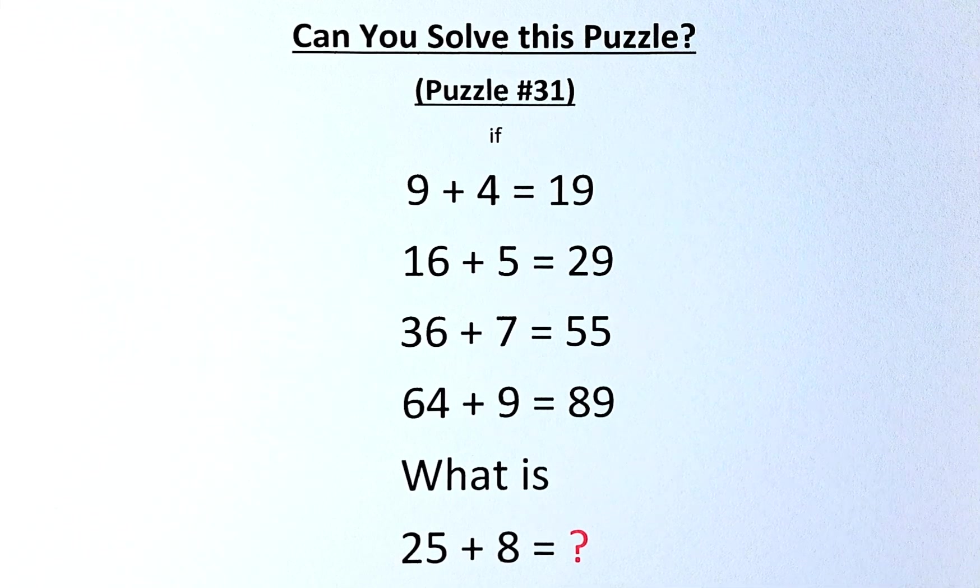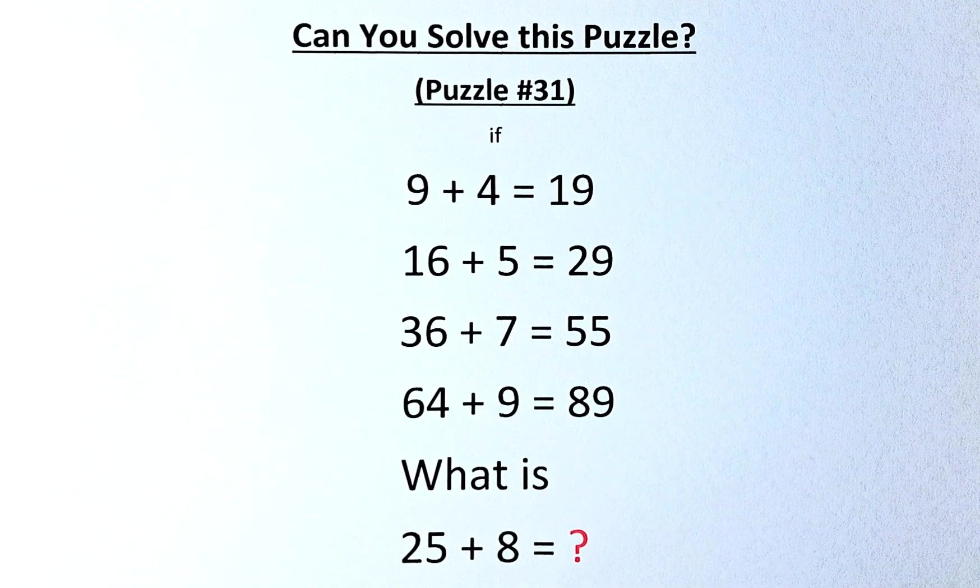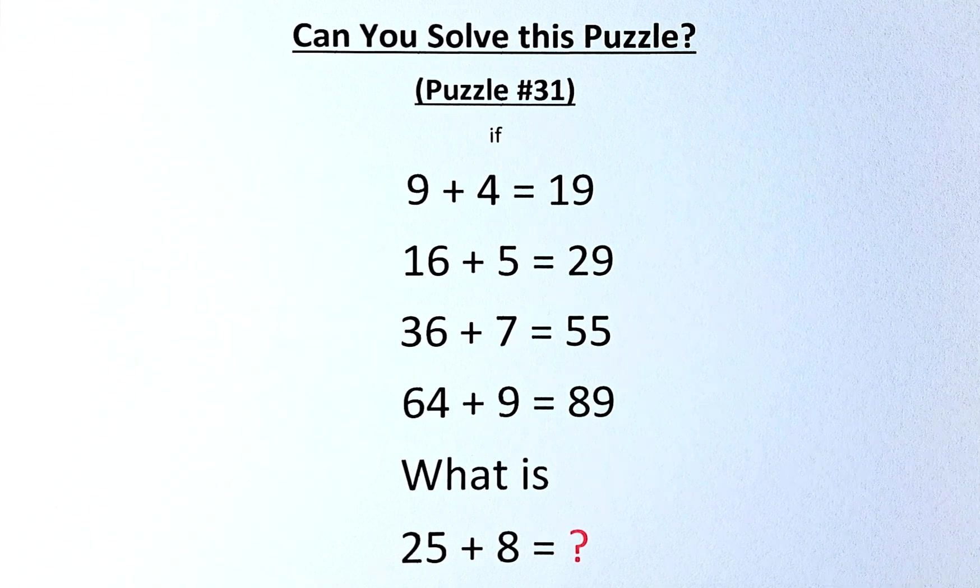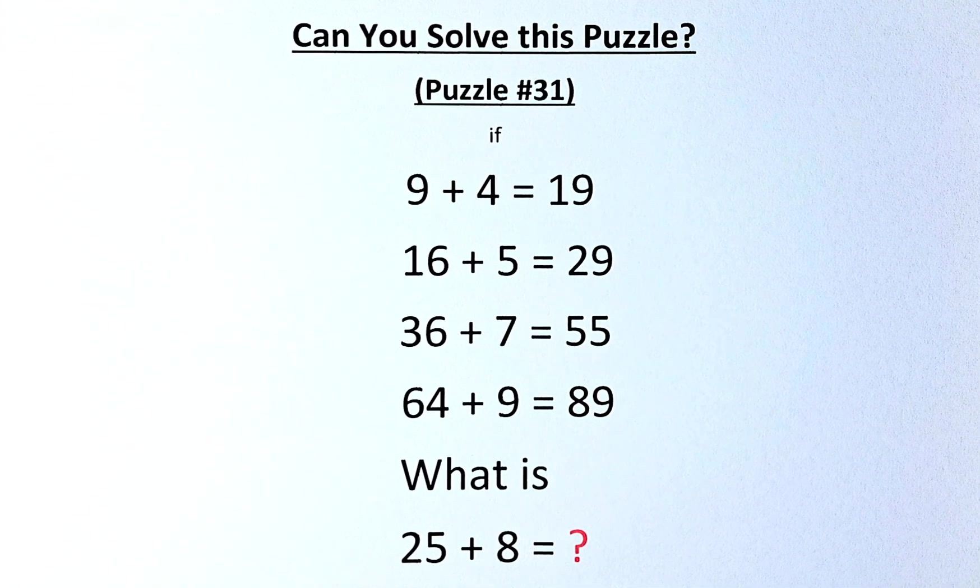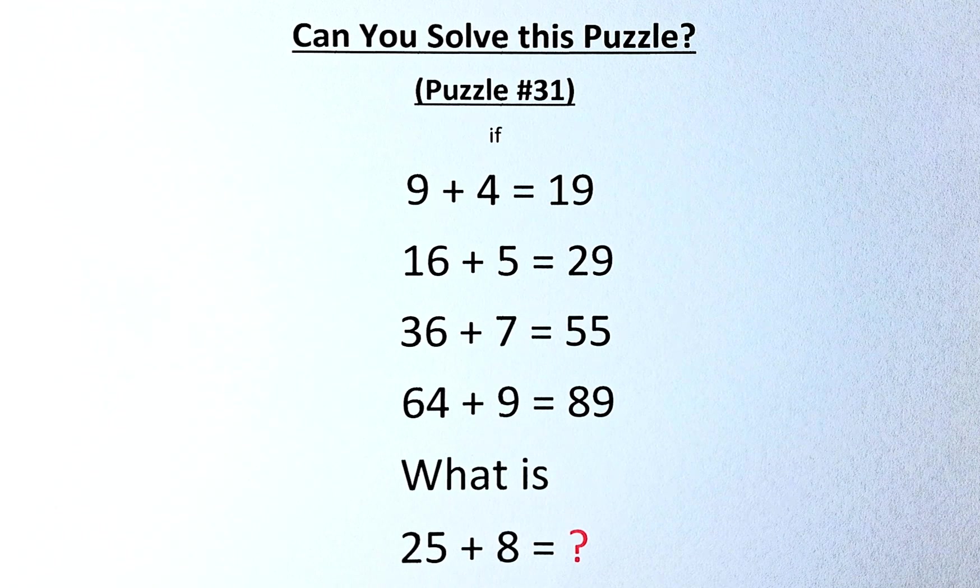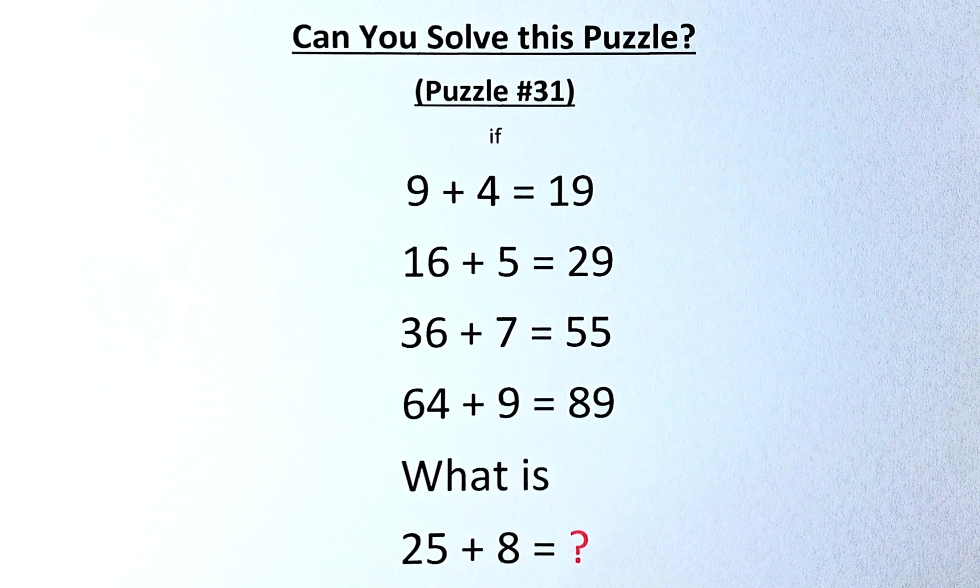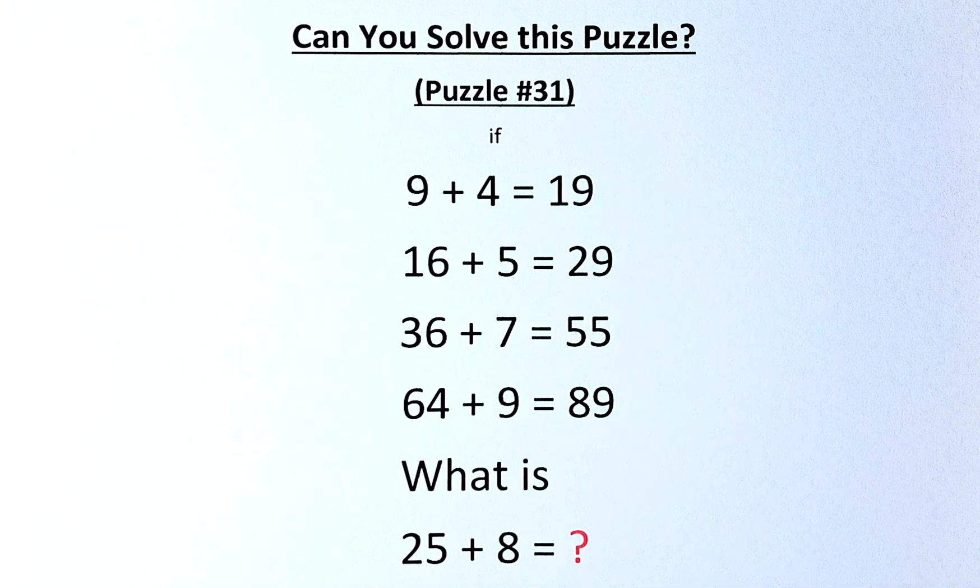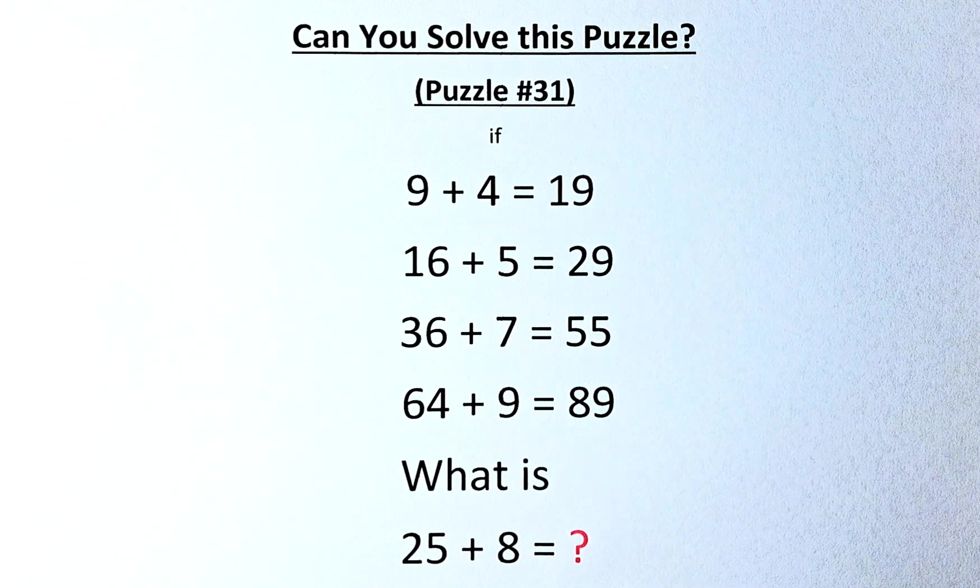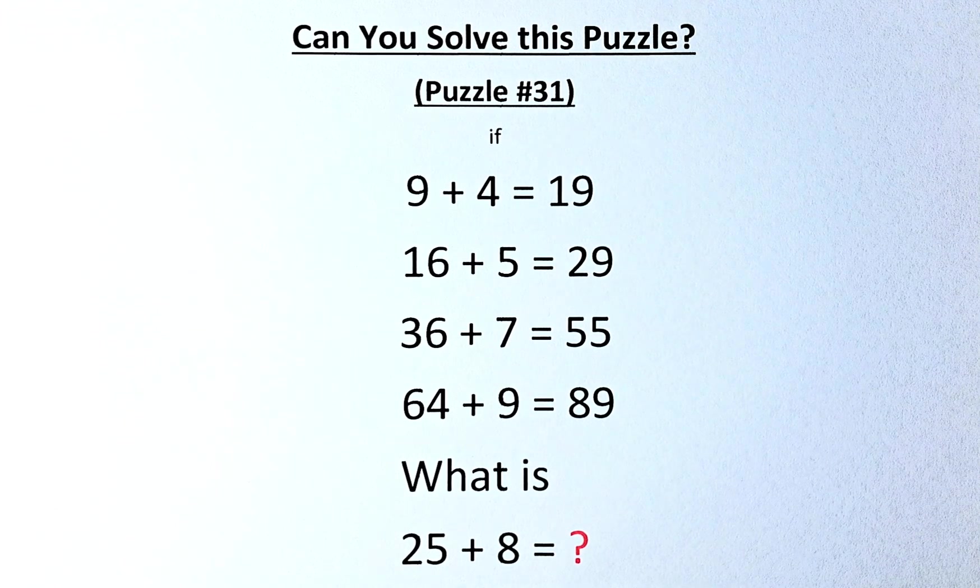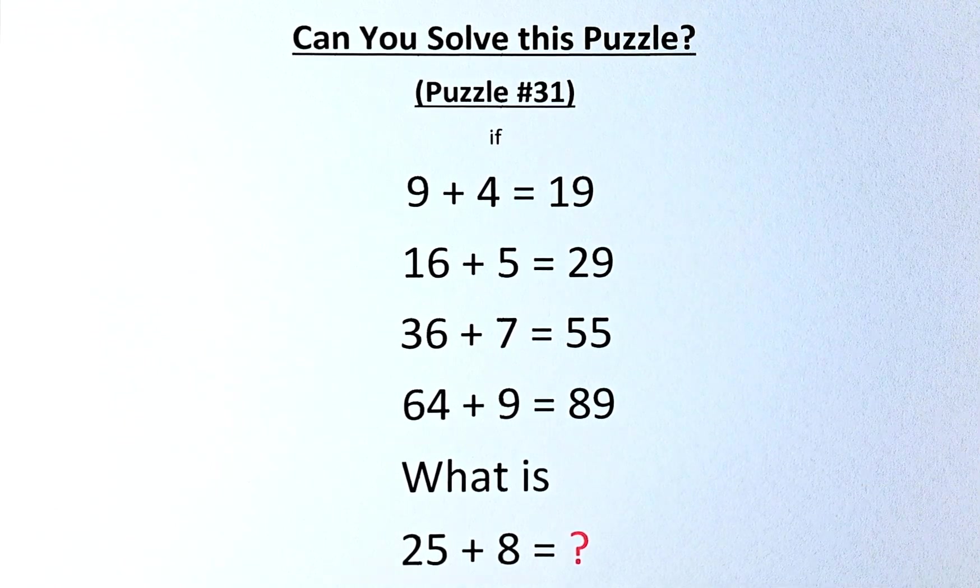Welcome back to the solution of puzzle number 31. Can you solve this puzzle? The question in the puzzle is if 9 plus 4 equals 19, 16 plus 5 equals 29, 36 plus 7 equals 55, and 64 plus 9 equals 89, what then is 25 plus 8 equals?